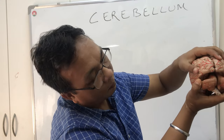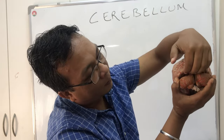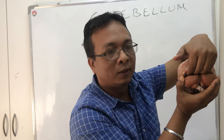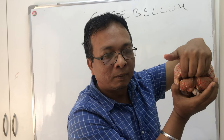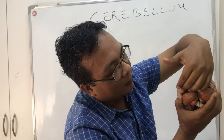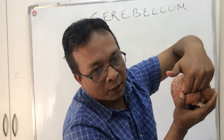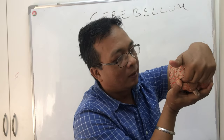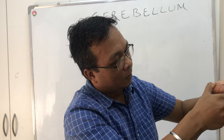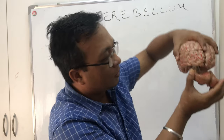Between the cerebellum and the cerebral cortex there is a tough sheet of tissue we call the tentorium cerebelli. This sheet of gray matter separates the cortex from the cerebellum.